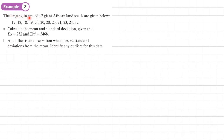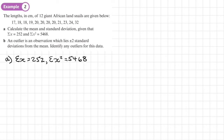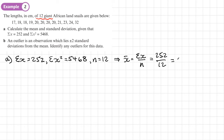Example 2. The lengths in centimetres of 12 giant African land snails are given. Part A: calculate the mean and standard deviation, given that the sum of x is 252 and the sum of x squared is 5468. We have n = 12. The mean is the sum of x over n, which is 252 divided by 12, giving a mean of 21. So x-bar is 21.